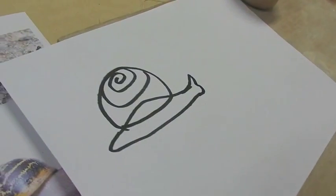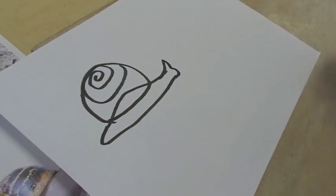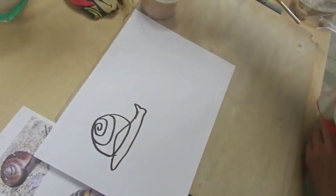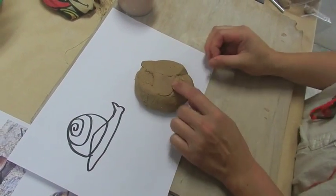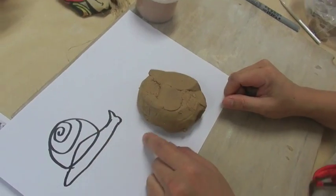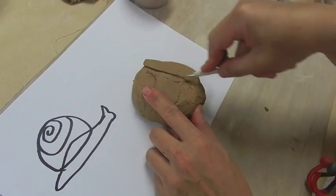Now we'll start to make, and we'll use one piece of clay and divide it into two parts. One piece of clay here. So for the shell, since it's so big, we're going to divide it into two-thirds and one-third.